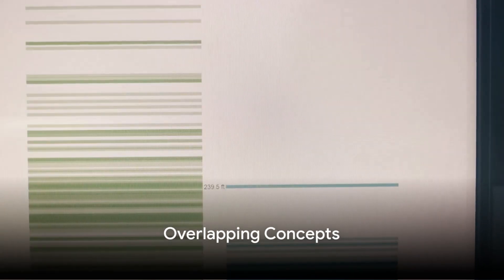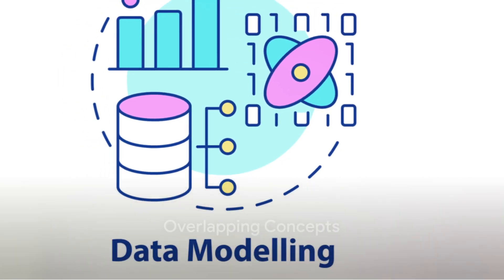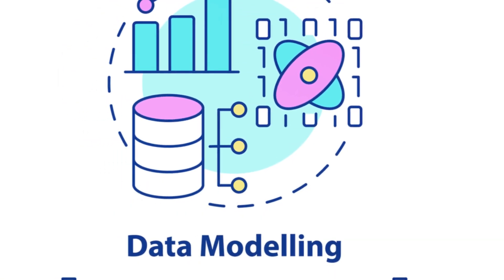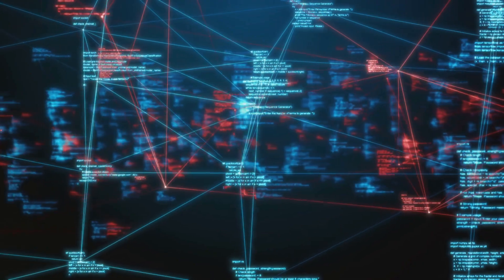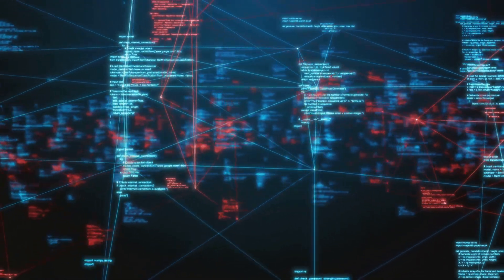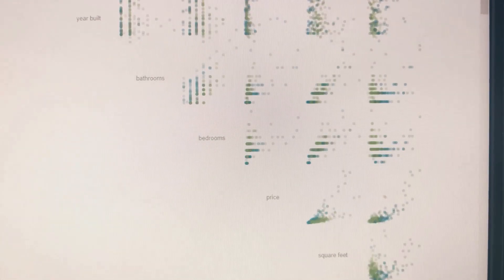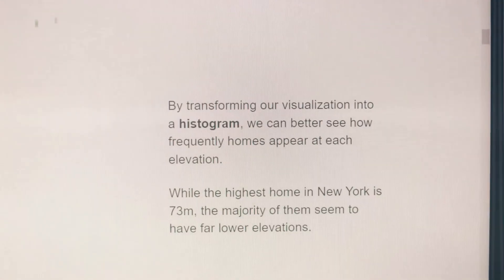Now, where do these two meet? Both machine learning and statistical modeling aim to understand data. They both use algorithms to dissect, analyze, and interpret data. They are tools in the same toolkit used by data scientists to make sense of the vast amounts of information we generate every day.